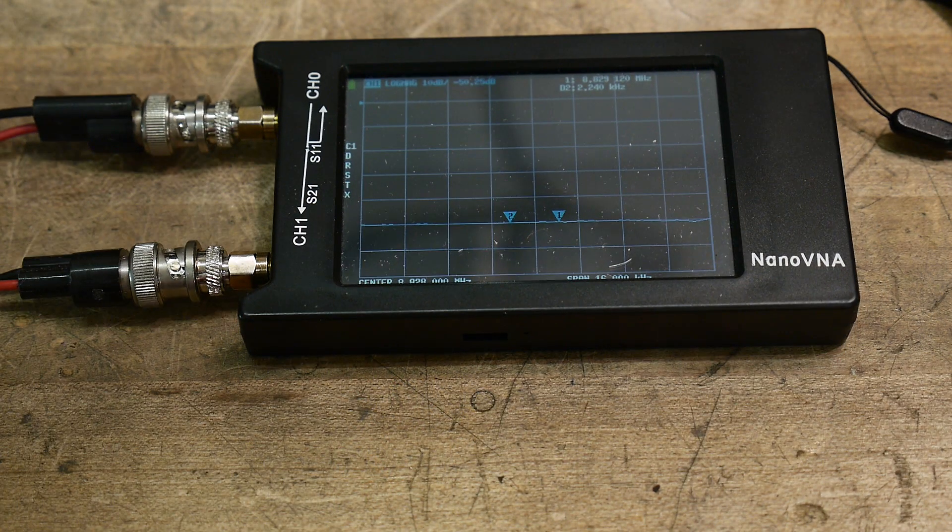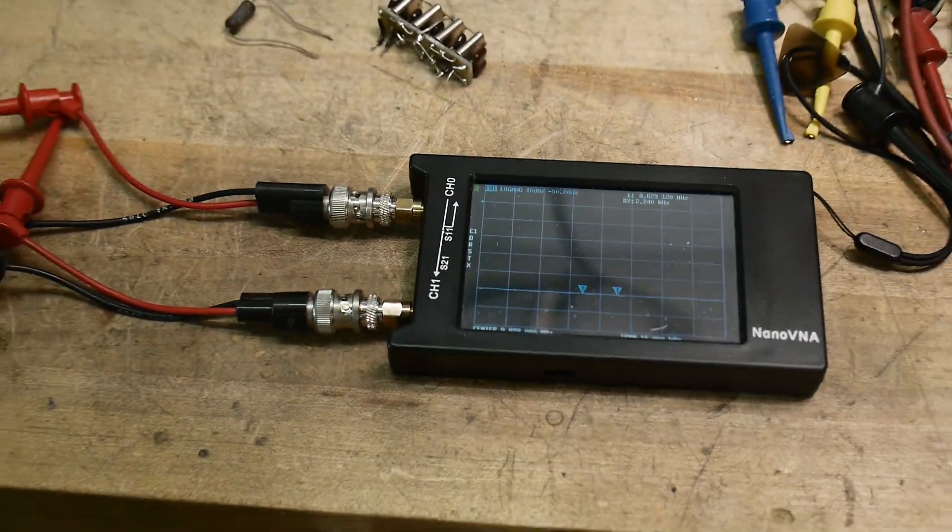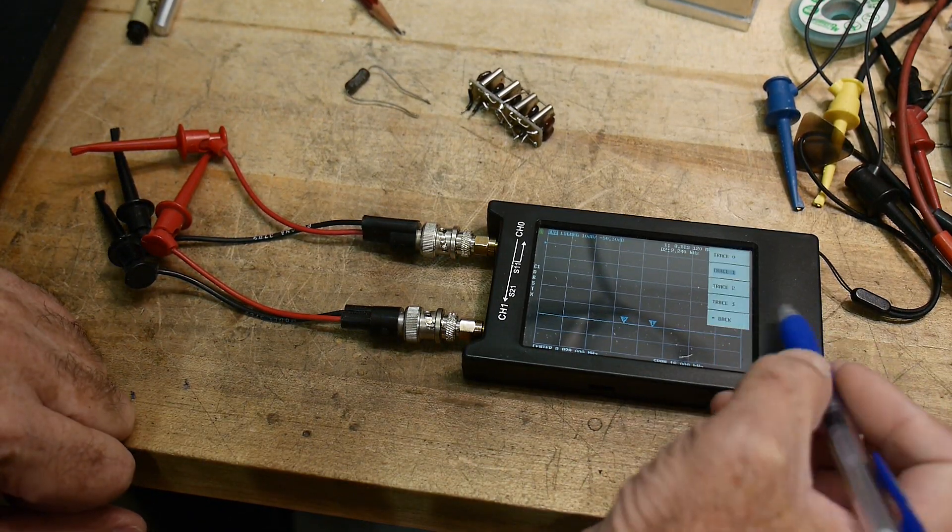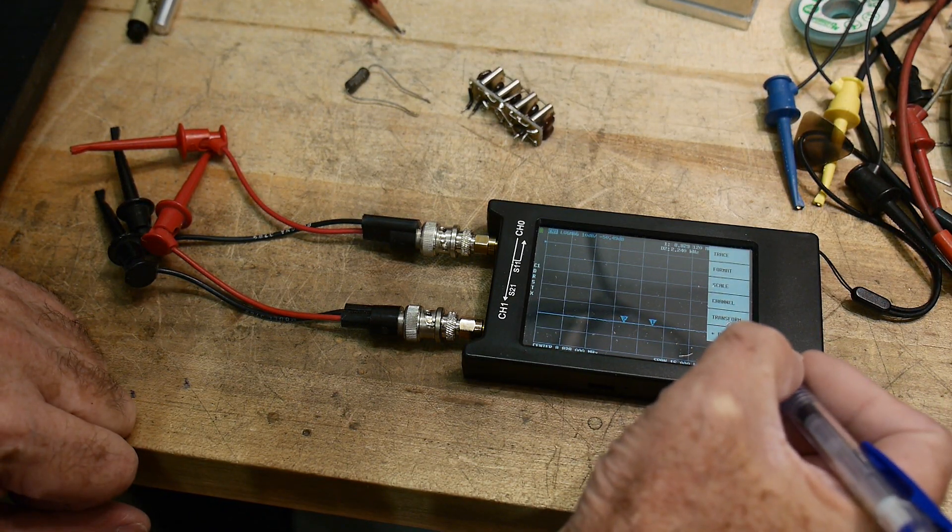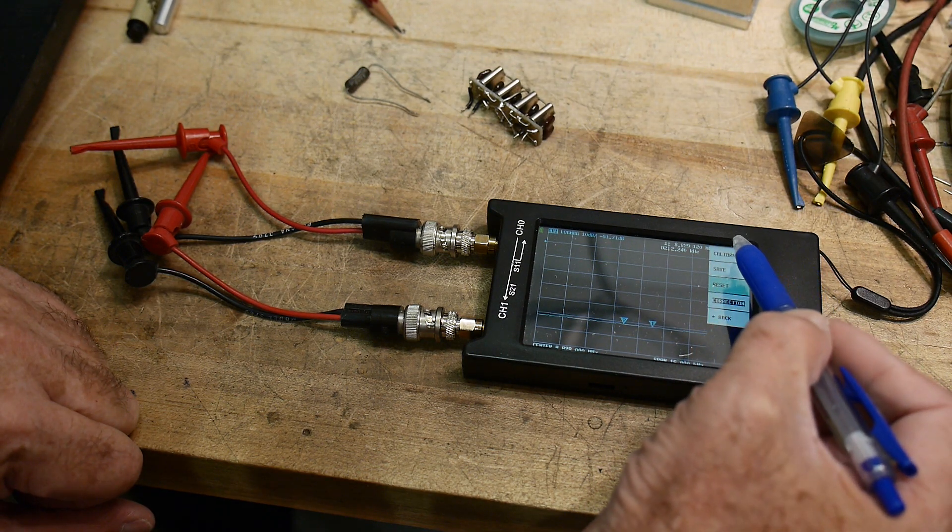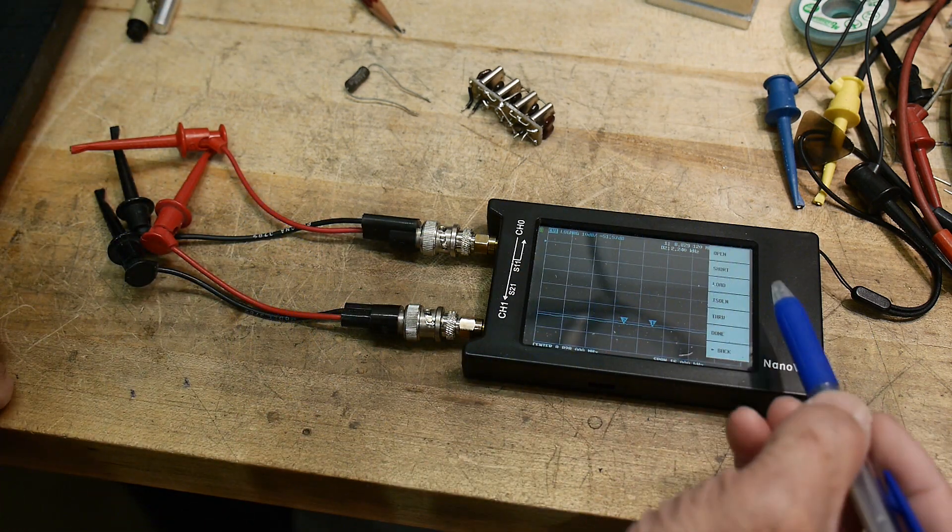So how do we calibrate with clip leads? Let's zoom out a bit. I'm going to calibrate. So I'm going to say back, cal, reset, and calibrate. I want to do an open. Well, guess what? They're already open. So I'm going to hit open.